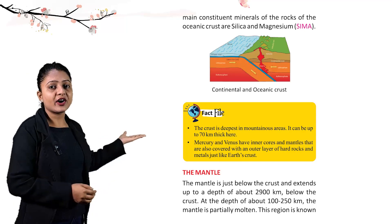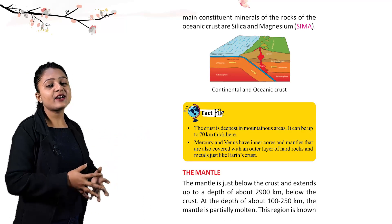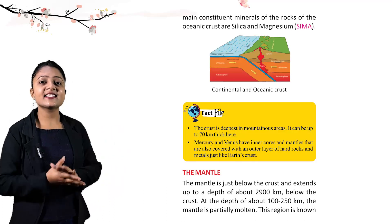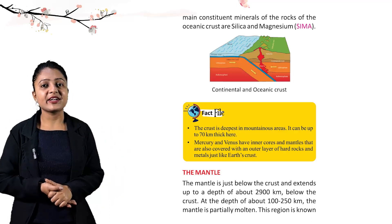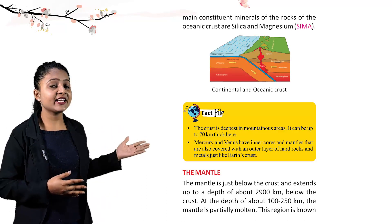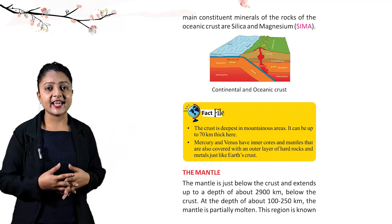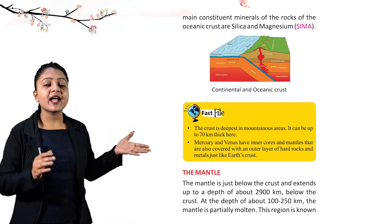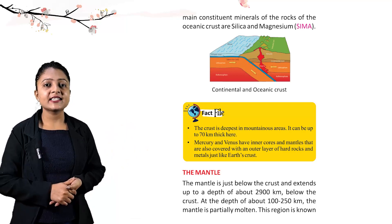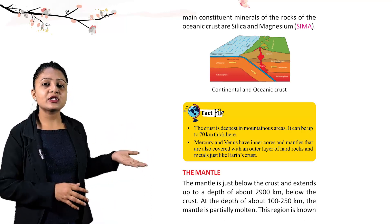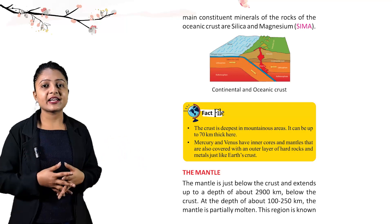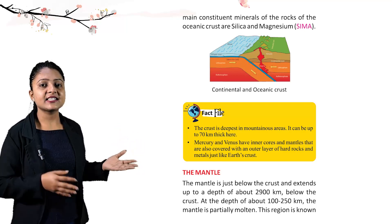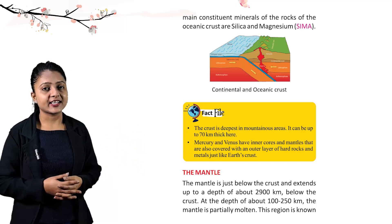This is the image of the continental and oceanic crust. Fact file: the crust is deepest in mountainous areas — it can be up to 70 km thick. Mercury and Venus also have inner cores and mantles covered with an outer layer of hard rocks and metals, just like Earth's crust.